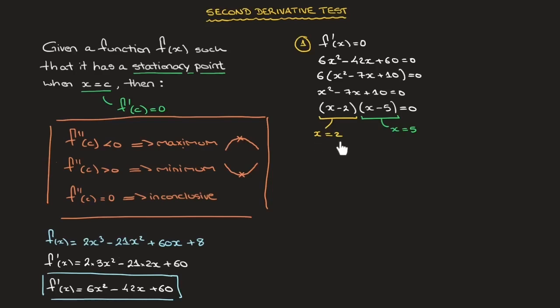We should calculate the y-coordinates of each stationary point. For x = 2, the y-coordinate is f(2) = 60. For x = 5, the y-coordinate is f(5) = 33. So the two stationary points have coordinates (2, 60) and (5, 33).